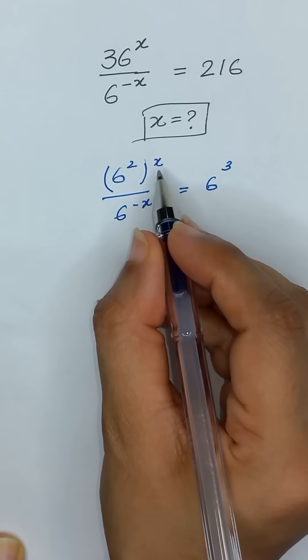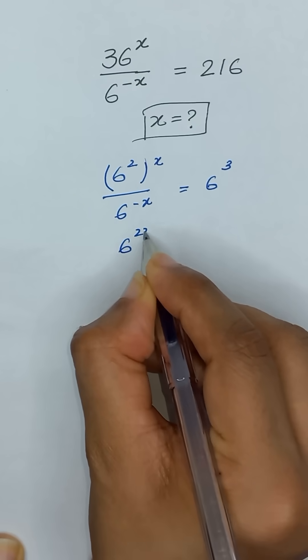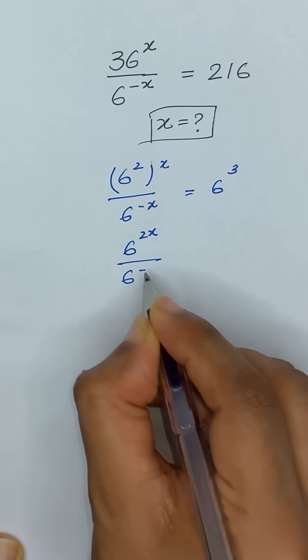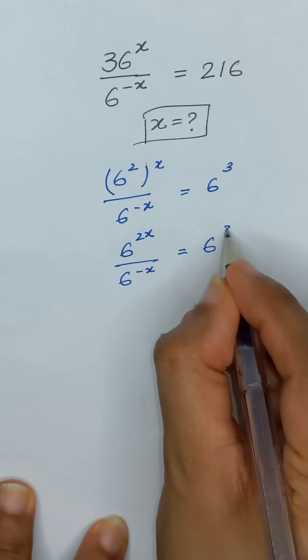As we know that a to the power m and its whole power n is equal to a to the power m times n, so it will become 6 to the power 2x divided by 6 to the power minus x is equal to 6 to the power 3.